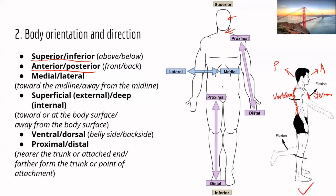Next is medial and lateral. Medial means toward the midline, and lateral means going away from the midline. For example, the heart is medial to the lungs, and the lungs are lateral to the heart. Similarly, the eyes are lateral to the nose, and the nose is medial to the eyes.